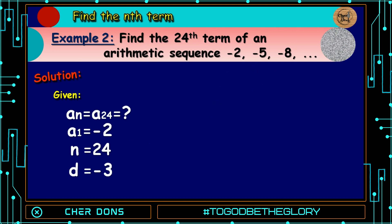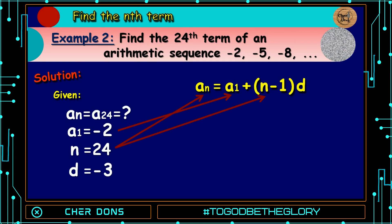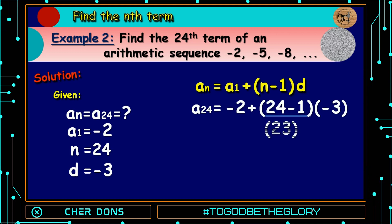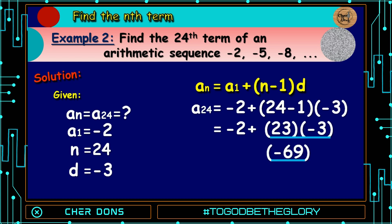Applying the formula: a sub n equals a sub 1 plus quantity n minus 1 multiplied by d. Substituting: negative 2 goes to a sub 1, 24 goes to n, negative 3 goes to d. A sub 24 equals negative 2 plus quantity 24 minus 1, that is 23 multiplied by negative 3, which equals negative 69. So negative 2 plus negative 69 gives a sub 24 equal to negative 71.